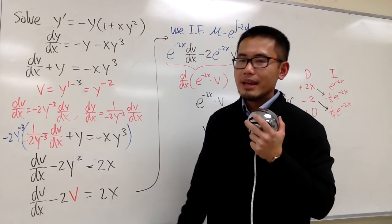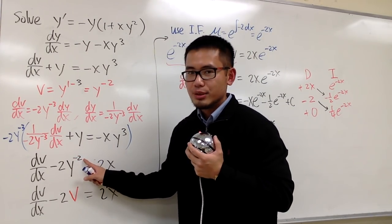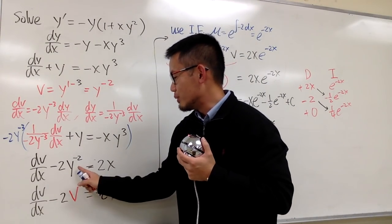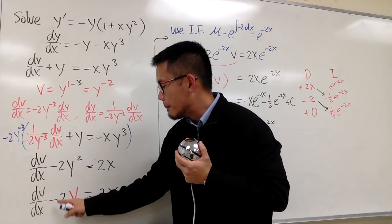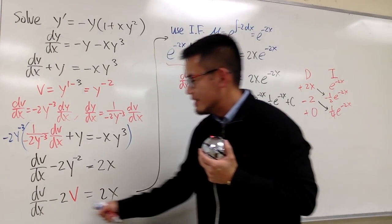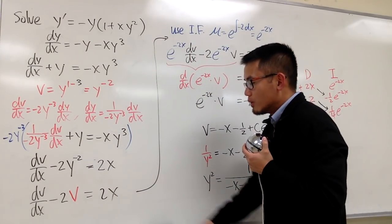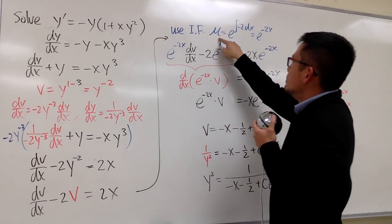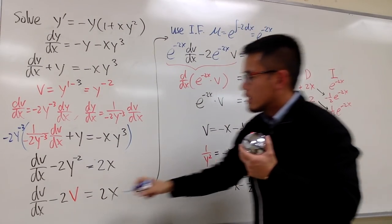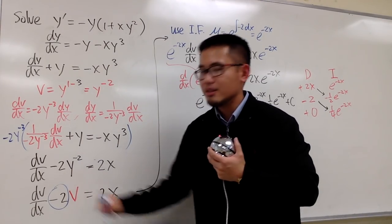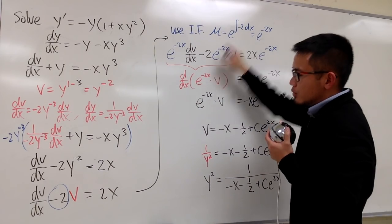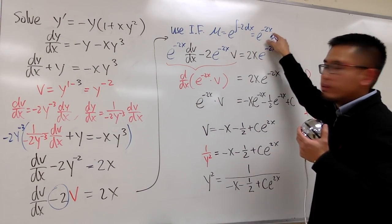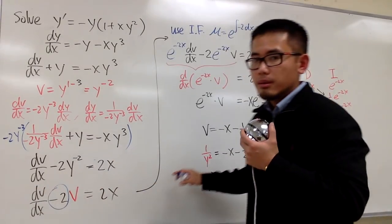We now have dφ/dx minus 2φ equals 2x. This equation is now linear. To solve a linear differential equation, we use the integrating factor. The integrating factor μ equals e raised to the integral of negative 2, which comes from the coefficient in front of φ. Integrating negative 2 gives negative 2x, so the integrating factor is e to the negative 2x.